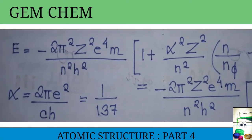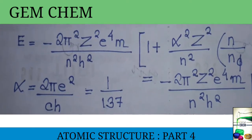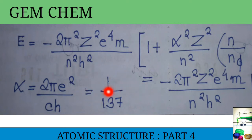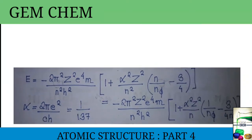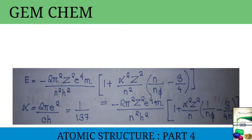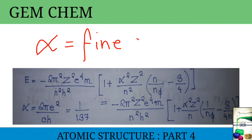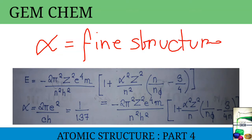The value of alpha is 2πe²/ch, and its value is approximately 1/137. Alpha is known as the fine structure constant — this should be remembered, along with its value.